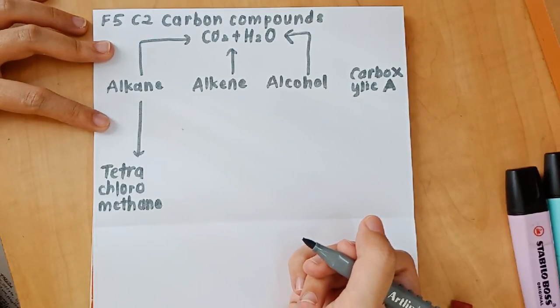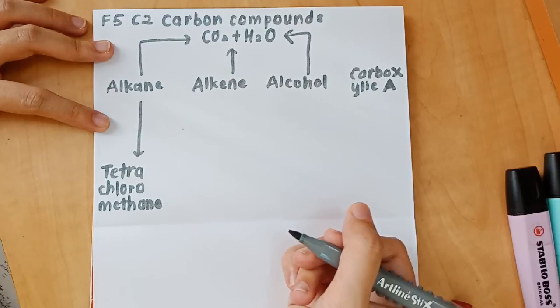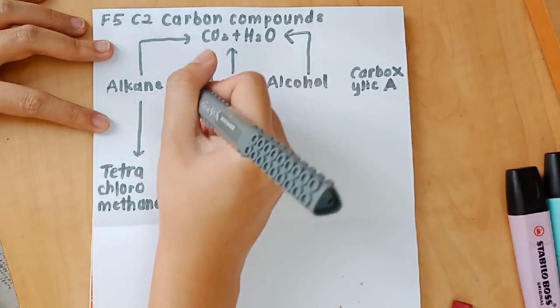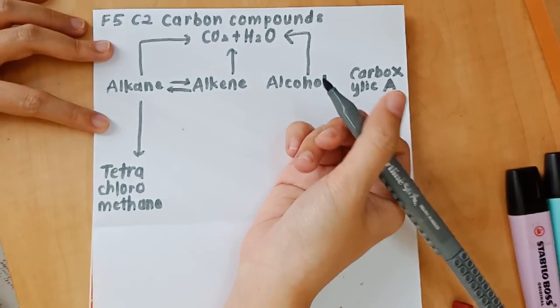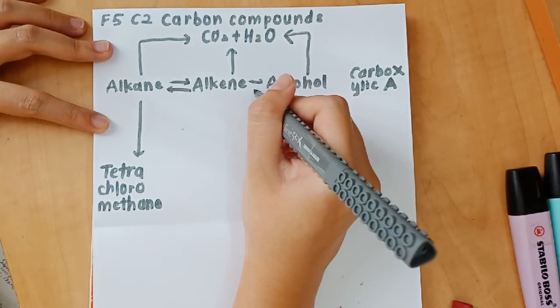And then next, from alkane, we have one arrow and it ends with tetrachloromethane. Because tetrachloromethane is an end product of that arrow.